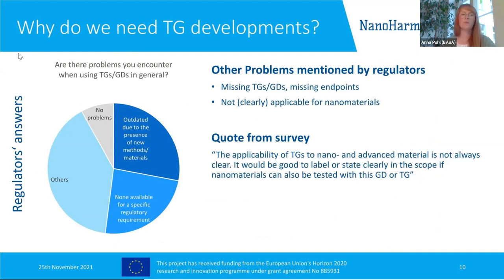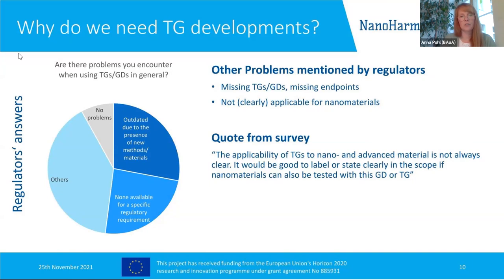We also asked regulators why we actually need further test guideline developments — beyond just using those that are already there. We got answers that yes, we need them because existing ones are outdated due to new materials or new methods; some are not available for regulatory purposes or requirements; and test guidelines are missing for some endpoints. A quote: 'The applicability of test guidelines to nano and advanced materials is not always clear — it would be good to label or state clearly in the scope whether nanomaterials can be tested with this test guideline or guidance document.'